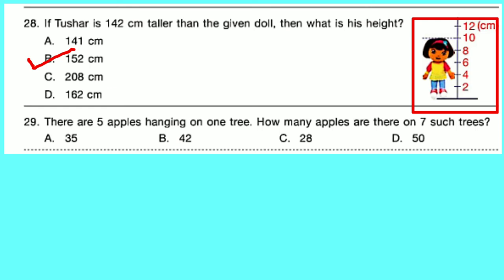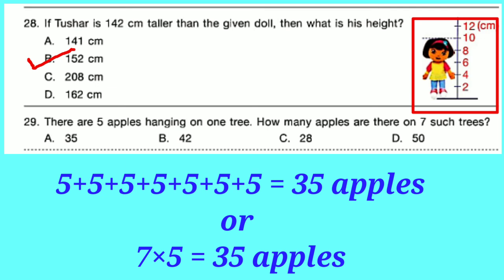Question number 29: There are 5 apples hanging on 1 tree. How many apples are there on 7 such trees? Adding 5 seven times we get 35. Or 5 into 7 equals 35. Option A is correct: 35.